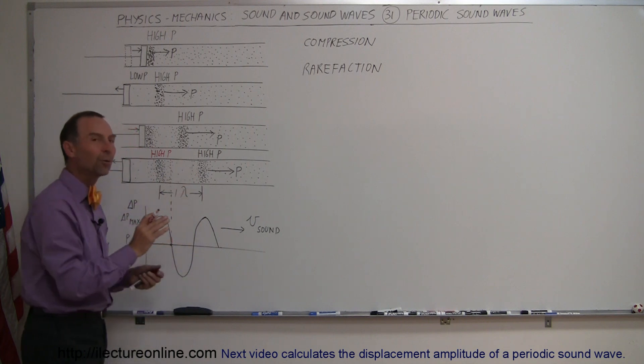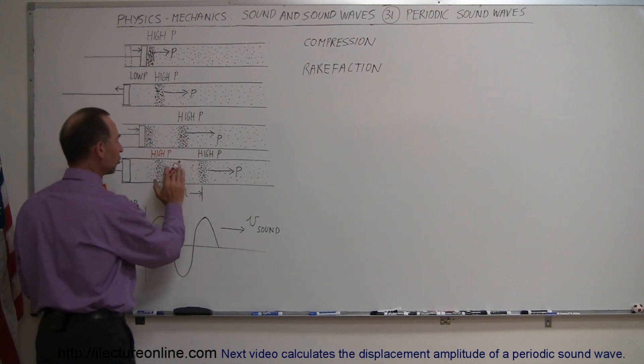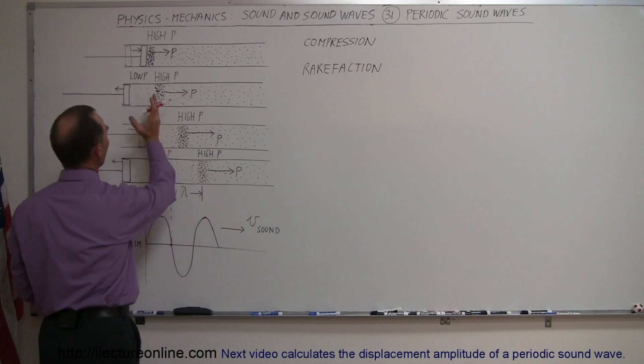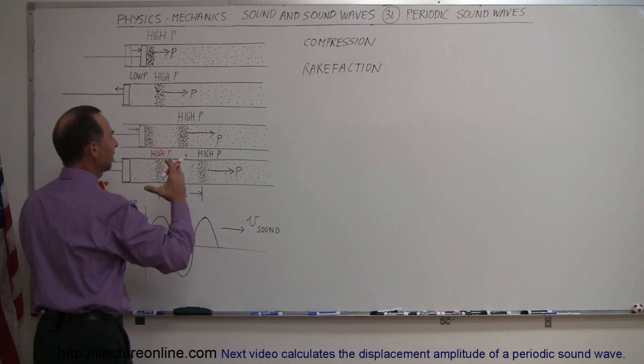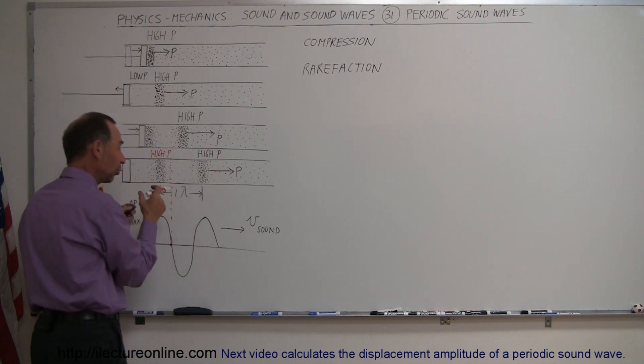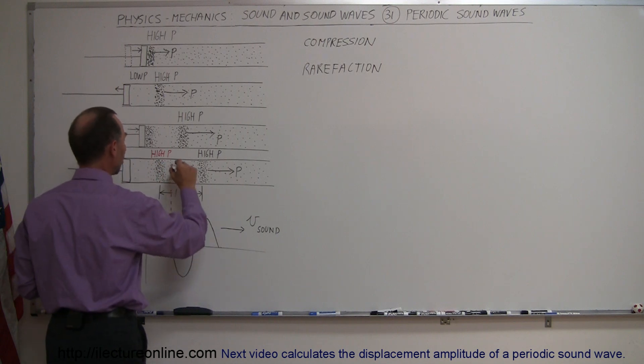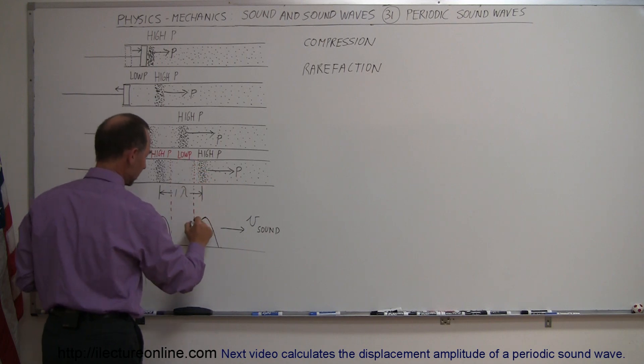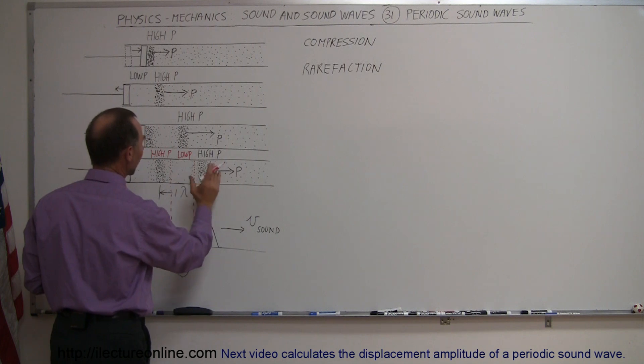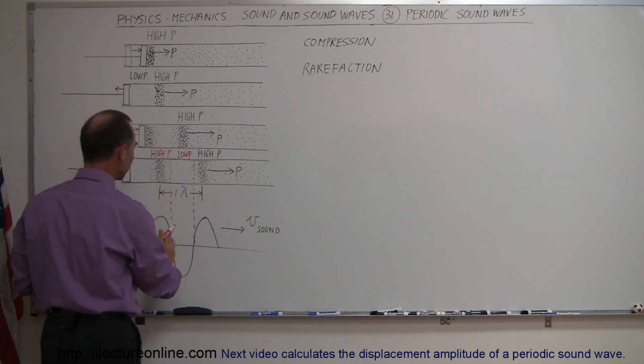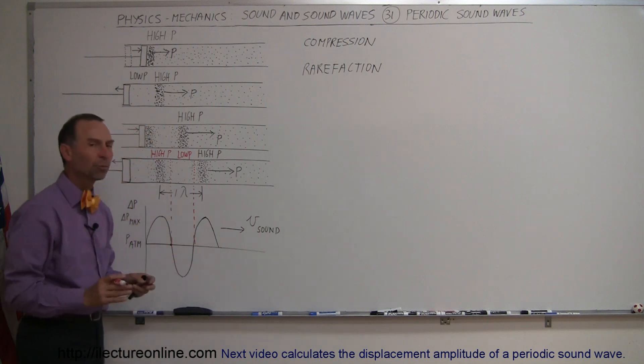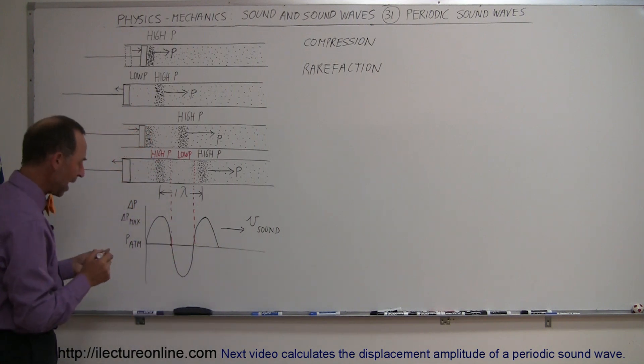Over here, this is a rarefied region, called a rarefaction, a region where the pressure is lower than the air pressure. That's caused by the piston moving back, evacuating the air. There's less pressure there, so this is low pressure. Then we get back to normal atmospheric pressure, then back to high pressure. So this is high, normal, low, normal, high pressure, and the difference between those two pressure points is called a wavelength.